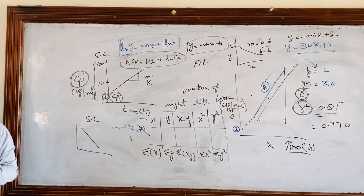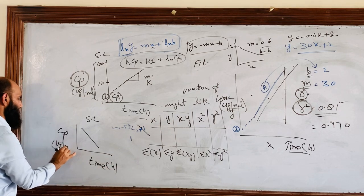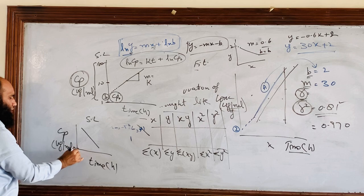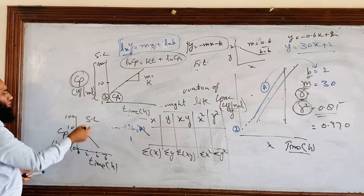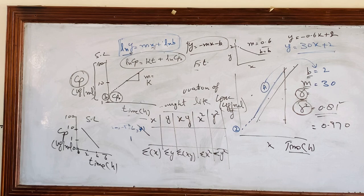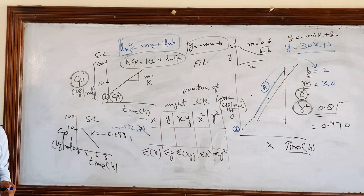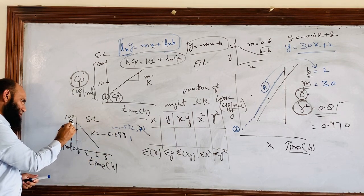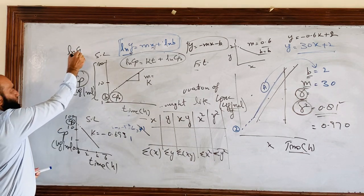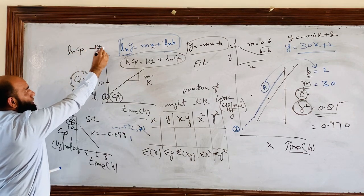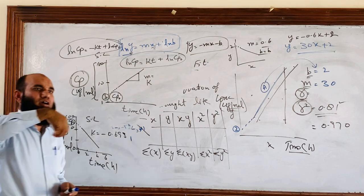Can anyone write the equation of this? Here is cp on y-axis and here is time in hours on x-axis. cp is in microgram per ml, graph is semi-log with values 0.1, 1, 10, 100, and time 0, 2, 4, 6. We have the k value of minus 0.69 and this value is now cp0. The equation would be ln cp is equal to minus kt plus ln cp0.